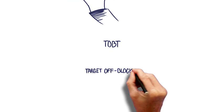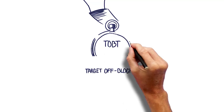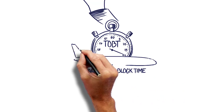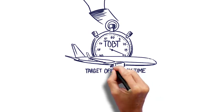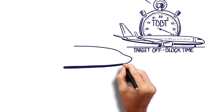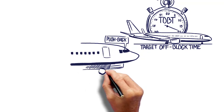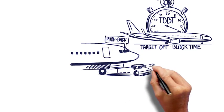TOBT is the target off-block time and indicates when a flight will be ready for pushback. The ground handler should adjust the TOBT whenever something deviates from the plan. A TOBT must never be updated once the pilot has called for pushback, unless the ground handler wants to delay the pushback.